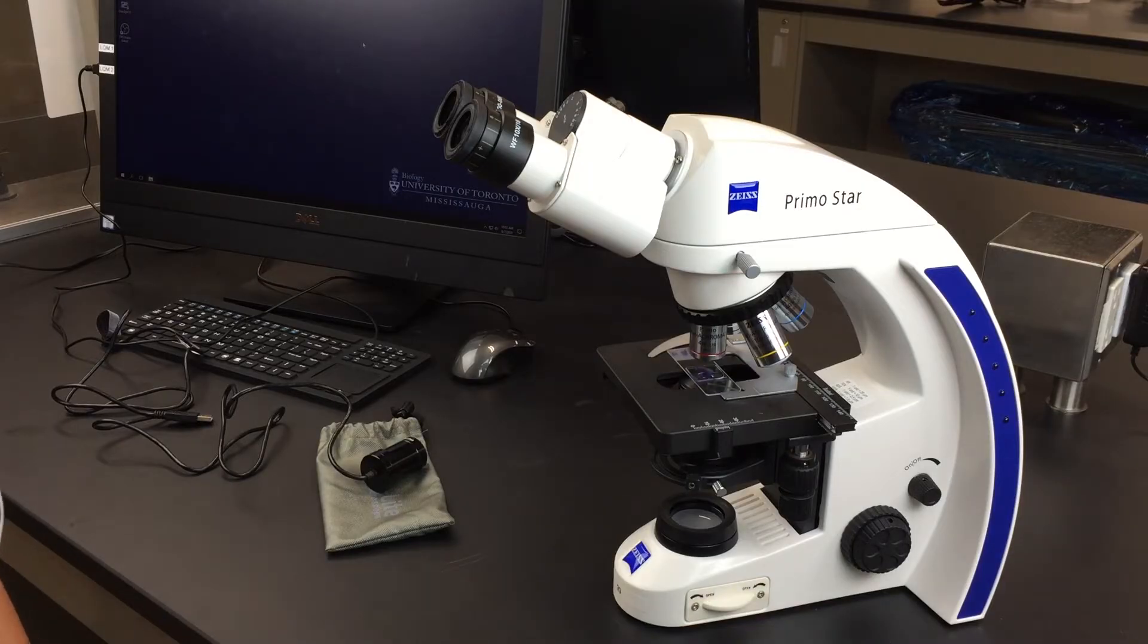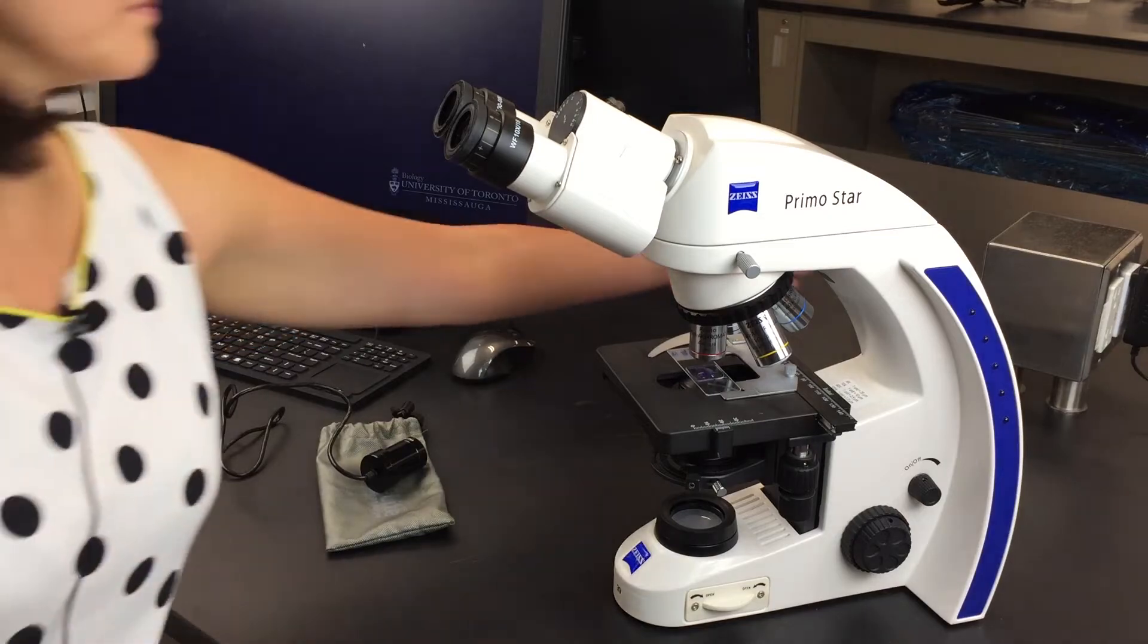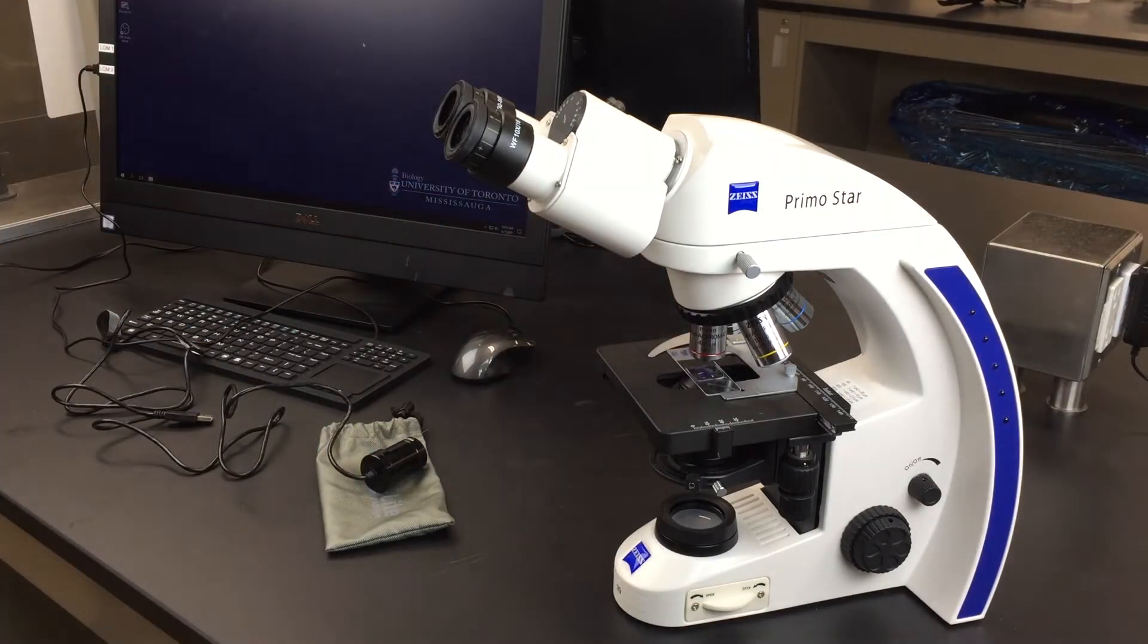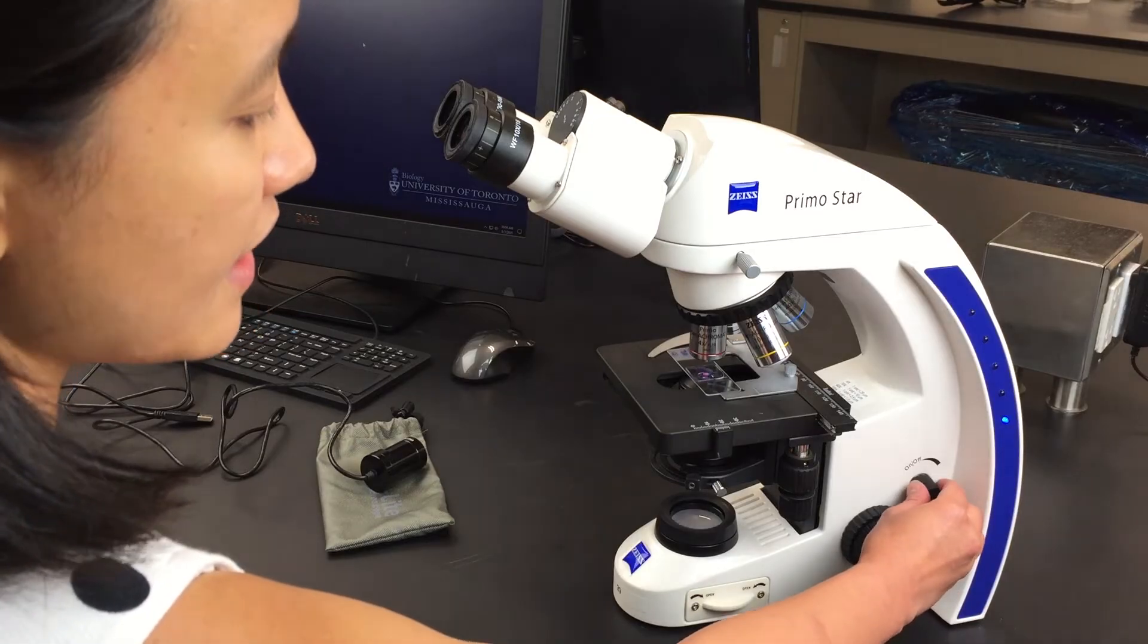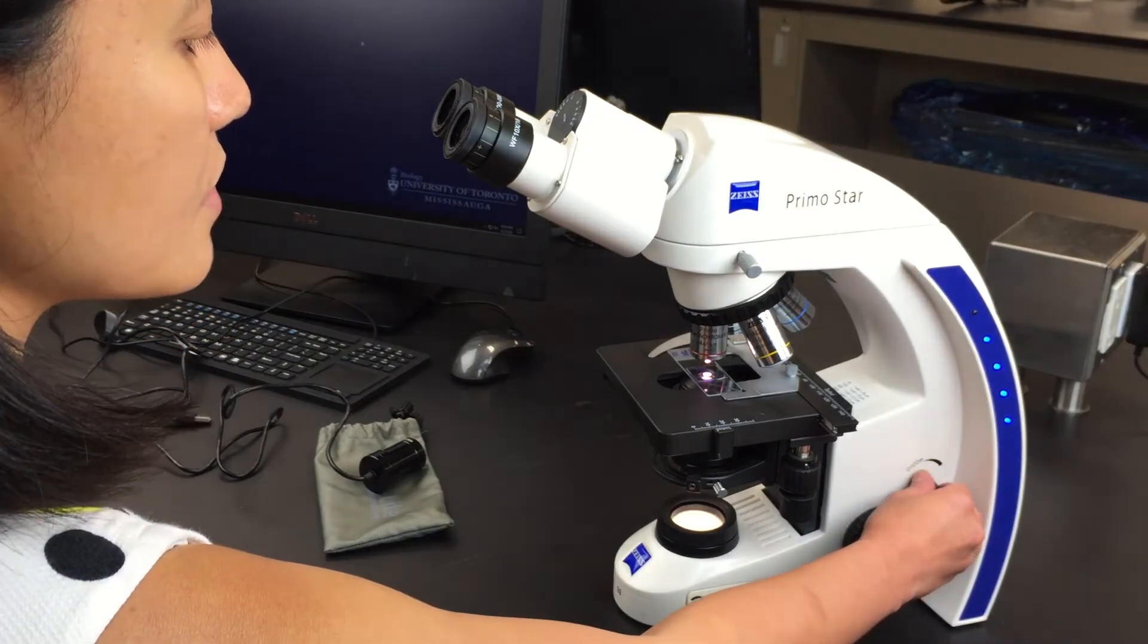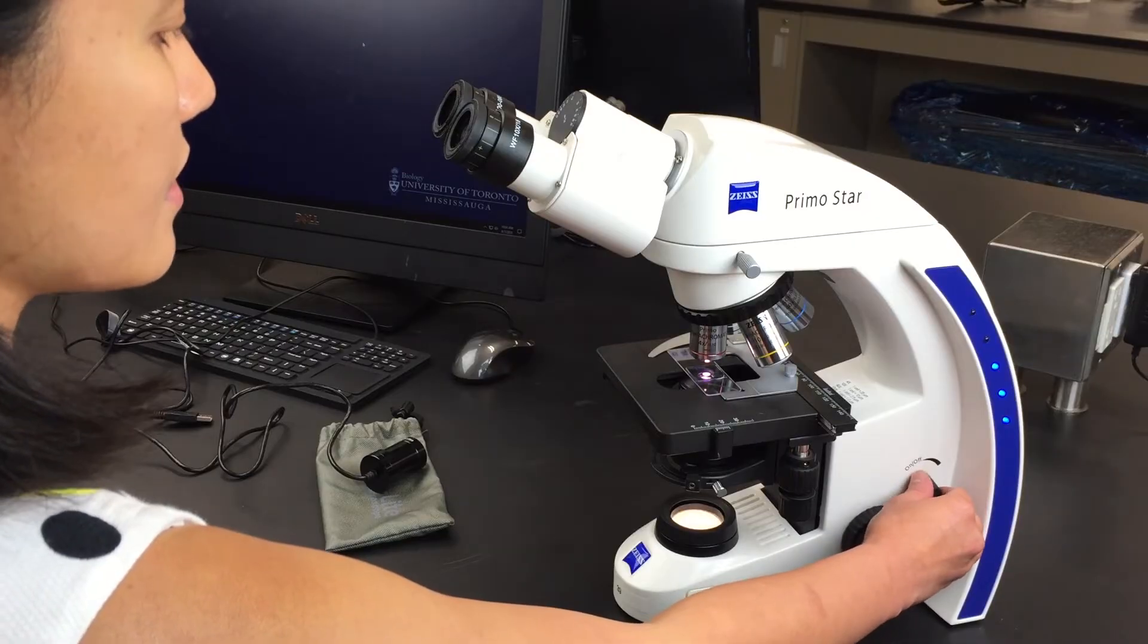First, plug the microscope into a power source. To turn on the Zeiss, the switch is on the right-hand side, and that knob also adjusts the light intensity going through your slide.